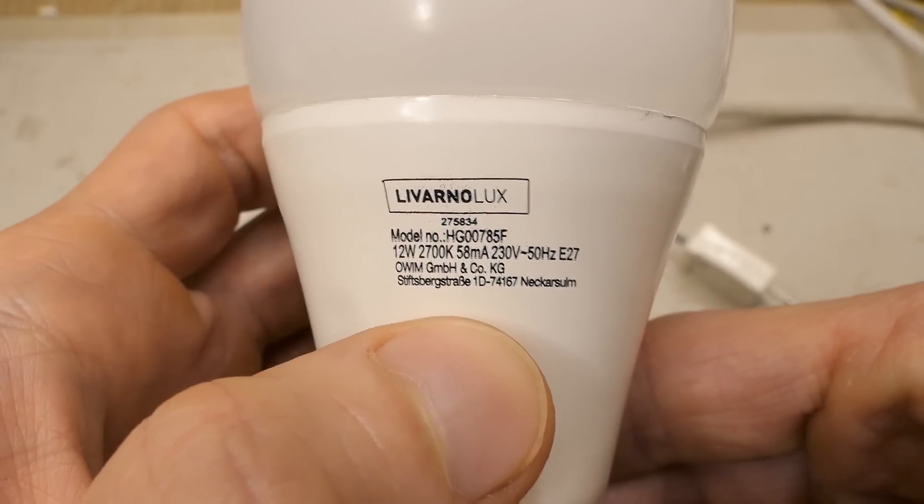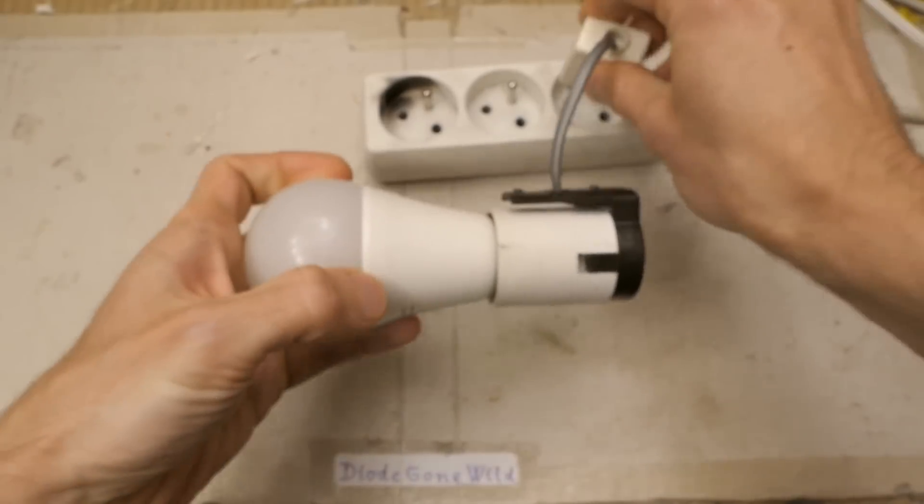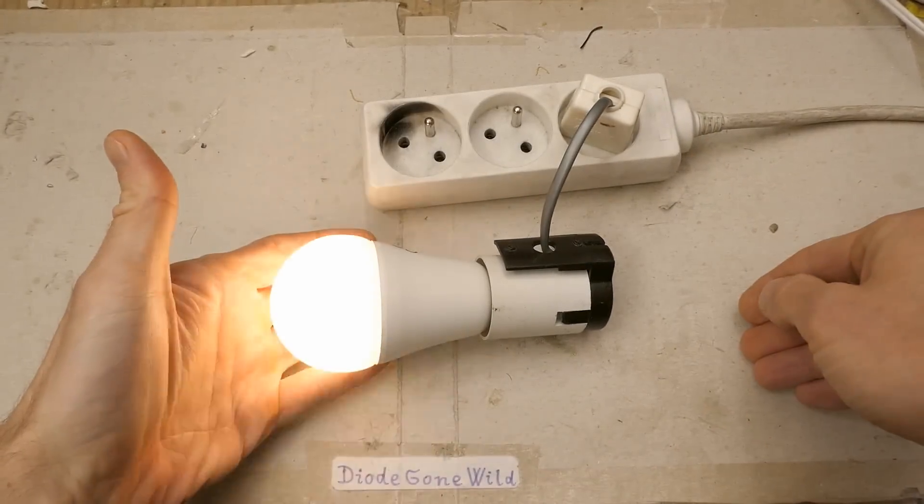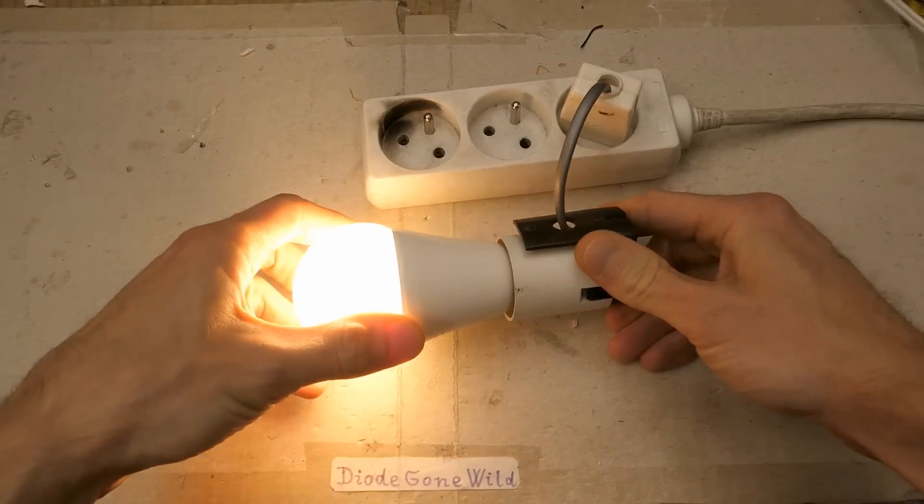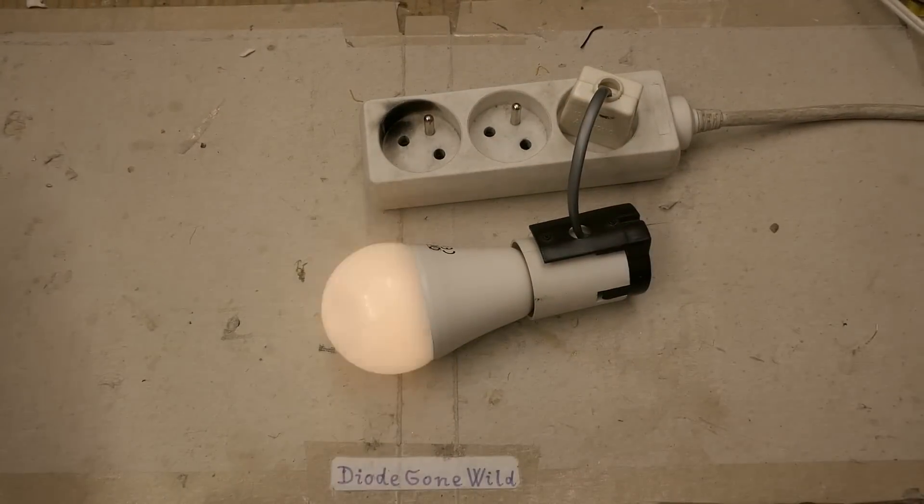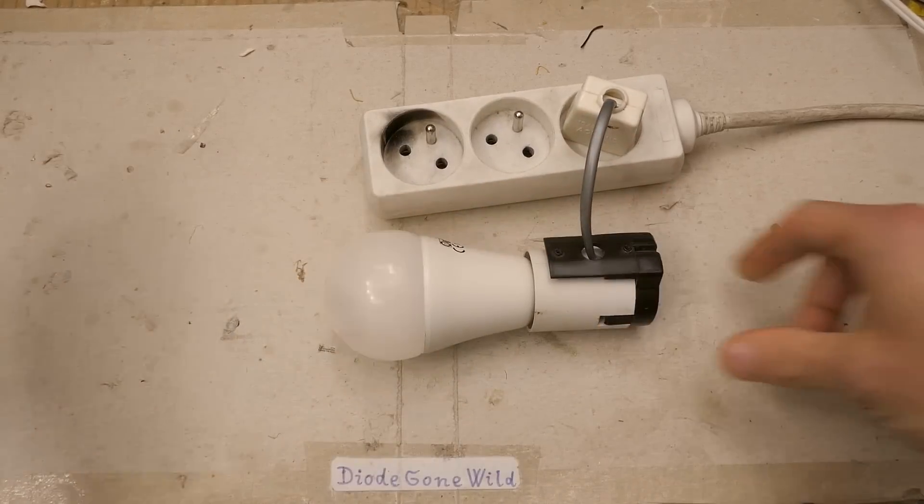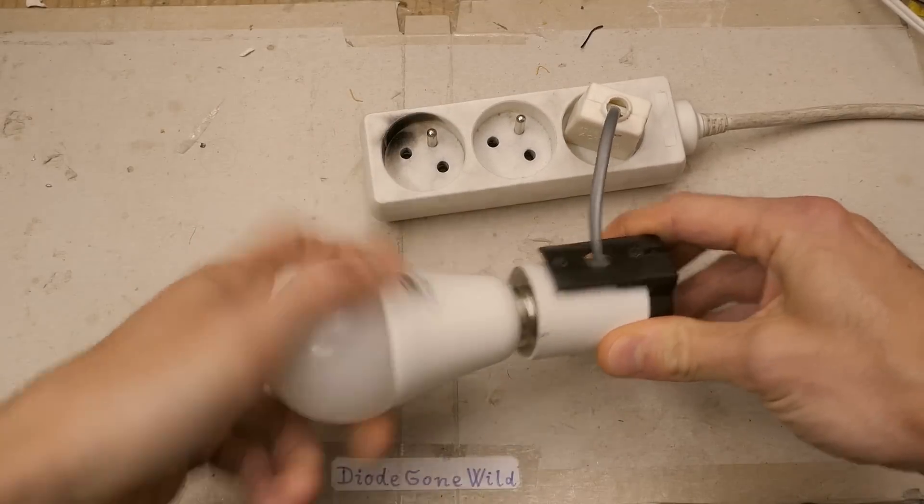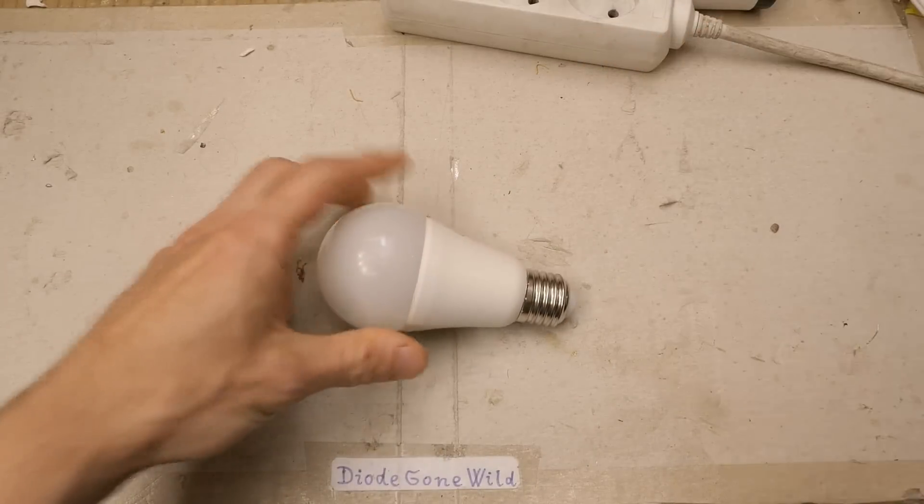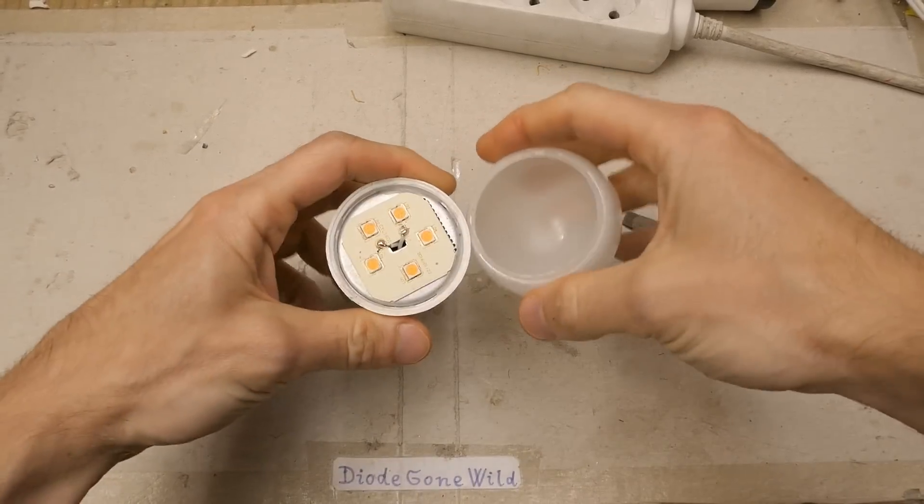Let's try to test it using this test socket and it flickers. It's intermittent and it's not a poor contact in the base. The intermittence is inside of the lamp. I guess there's time to open it. Let's pry this one. It was easy.